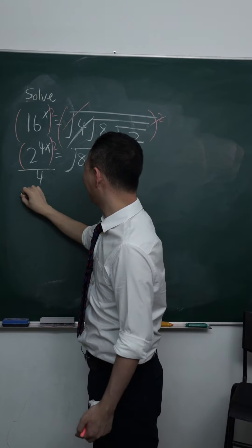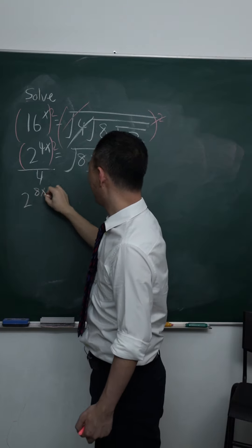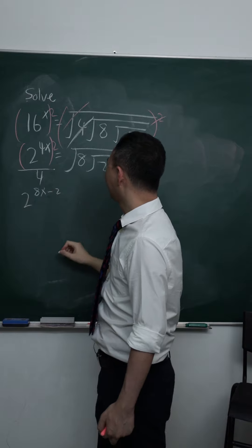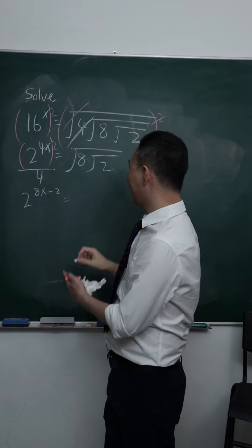In indices, we can write this as 2 power of 2x. This is 2 squared, minus 2. Then, equals to the whole thing.